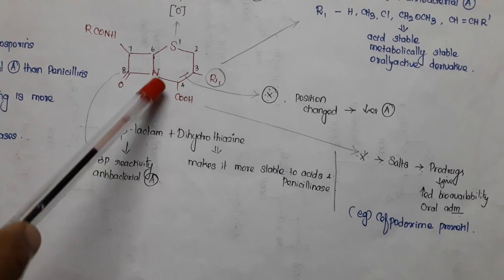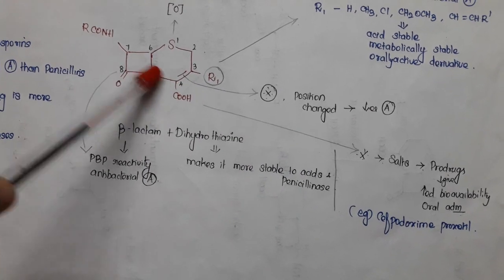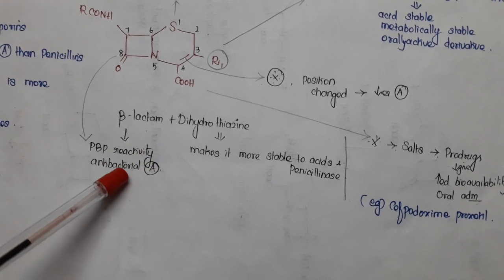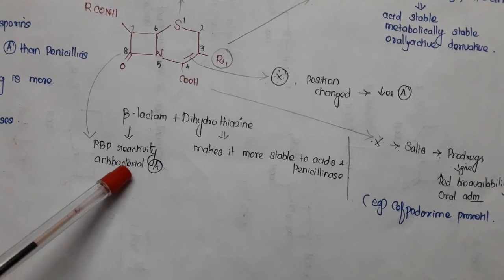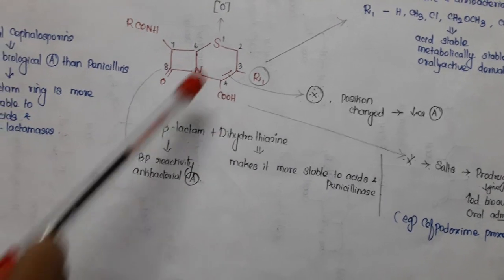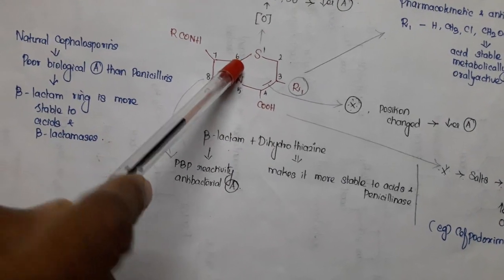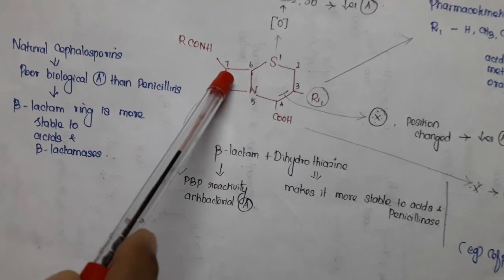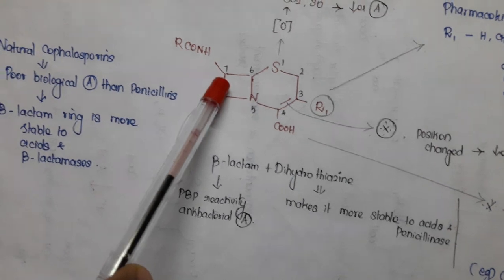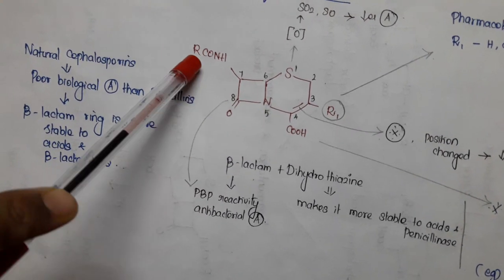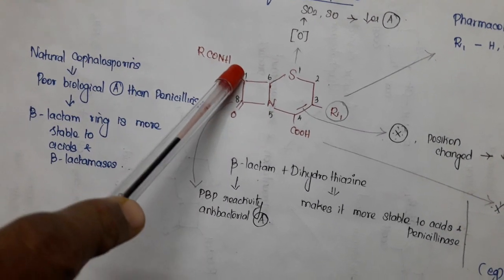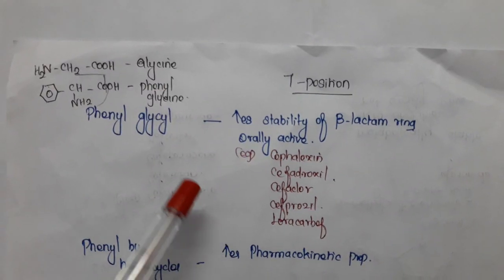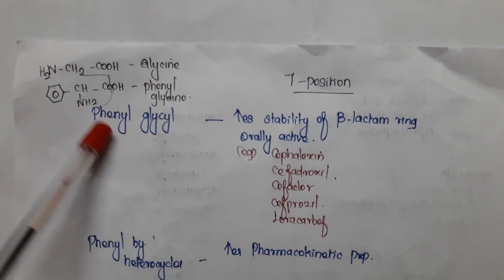The fifth portion and eighth portion are important for penicillin binding protein reactivity and antibacterial activity. The sixth portion is important for chirality. In the seventh portion, an acylamino side chain is added.